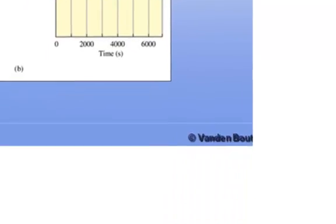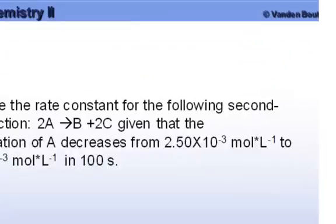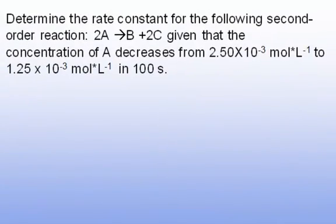Now let's look at an example of using the second-order rate equation. Determine the rate constant for the reaction 2A → B + 2C, given that the concentration of A decreases from 2.50×10⁻³ M to 1.25×10⁻³ M in 100 seconds.